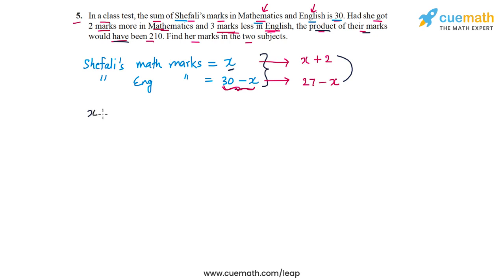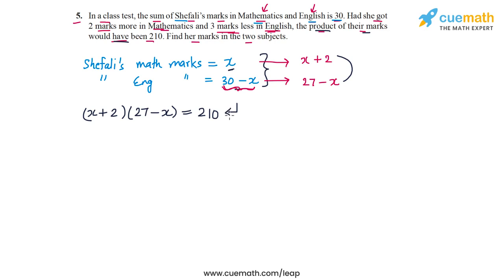This means that (x + 2) times (27 - x) should be equal to 210. This is how we set up an equation in x for this situation, and we can see that this is a quadratic equation in x. Solving it will give us Shefali's marks in both math and English.